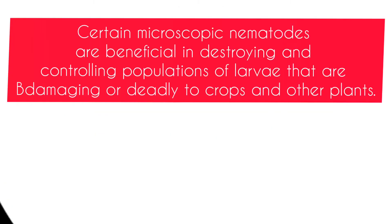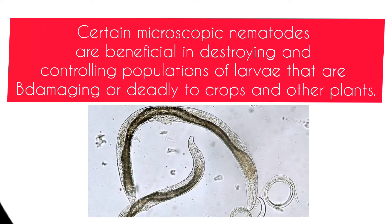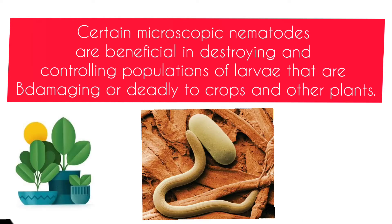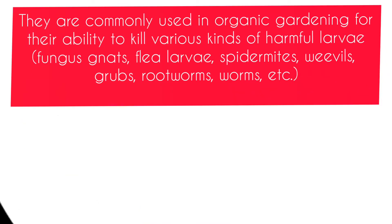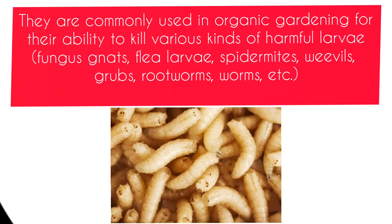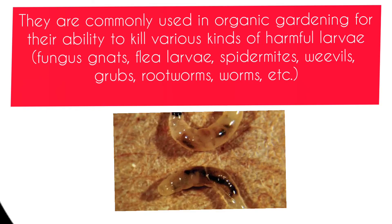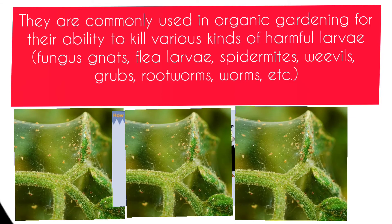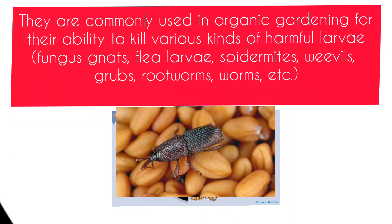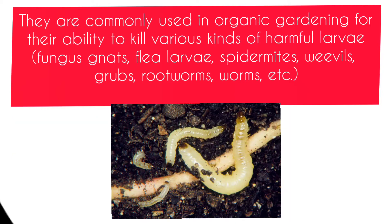Certain microscopic nematode worms are beneficial in destroying and controlling populations of larvae that are damaging or deadly to crops and other plants. They are commonly used in organic gardening for their ability to kill various kinds of harmful larvae, including fungus gnats, flea larvae, spider mites, weevils, grubs, rootworms, and worms.